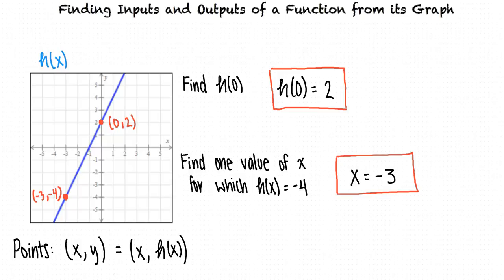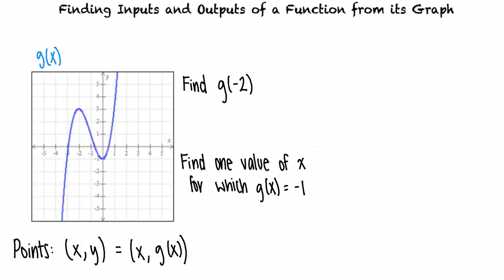Why don't you try the next problem? Given the graph of the function g, we want to find g of negative 2 and one value of x for which g of x equals negative 1. To find g of negative 2, we need to find a point where the x-coordinate is negative 2. There is one point on the graph that fits this criteria, which is the point negative 2 comma 3. Since the y-coordinate of this point is 3, g of negative 2 equals 3.